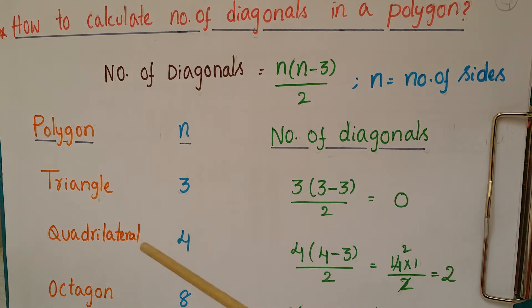Next, if you take a quadrilateral, the number of sides is 4. So 4(4-3)/2, that is 4×1/2, which equals 2. So the number of diagonals for a quadrilateral is 2.